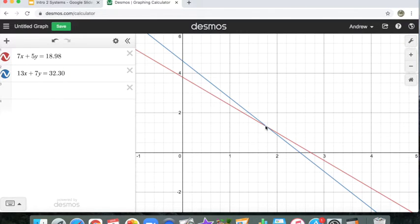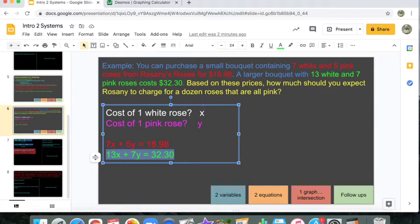So in Desmos, you could actually hover over this point right here where they're crossing. And it gives me 1.79 comma 1.29. X and Y. And what did those things represent? 1.79 was my cost of white roses. 1.29 is going to be my cost of pink roses.